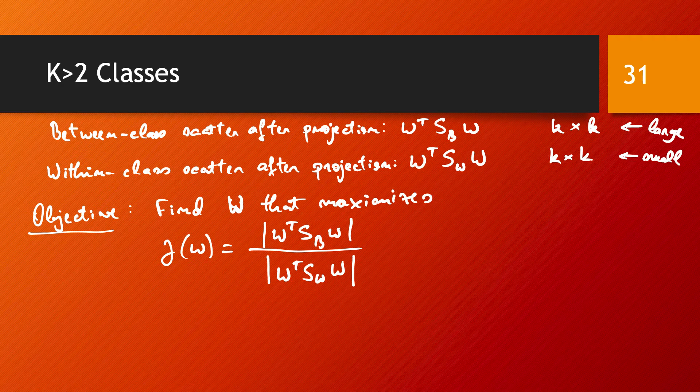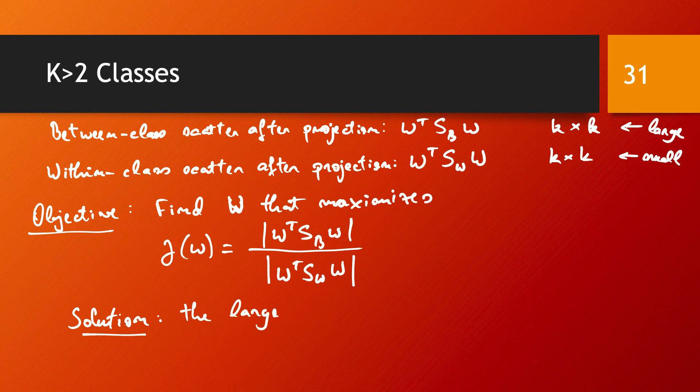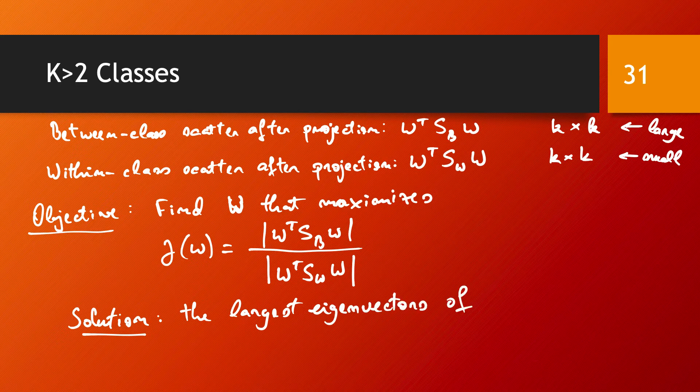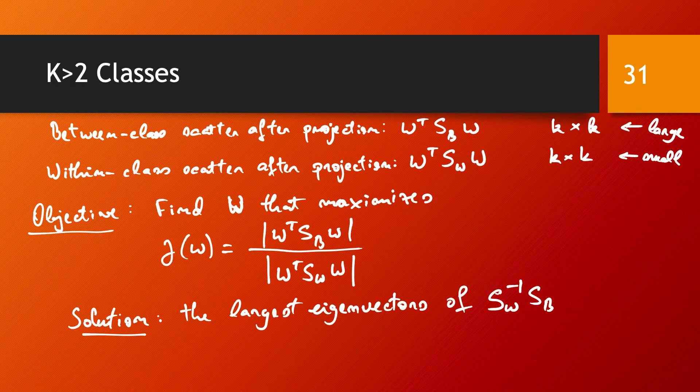And the largest eigenvectors of S_B are the solution. So solution, we will take the largest eigenvectors of S_W inverse S_B. And S_B is the sum of a number of matrices of rank one, one for each class.